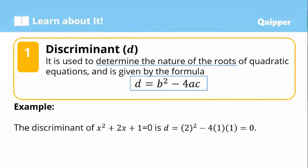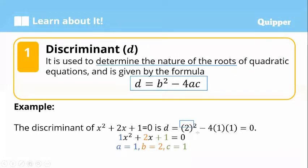For instance, the discriminant of x squared plus 2x plus 1 equals 0 is 0. First, we identify the values of A, B, and C. The quadratic term has a coefficient of 1, so A is 1, B is 2, and C is 1. Substituting into the formula: 2 squared is 4, minus 4 times 1 times 1 is also 4. That is why our discriminant is 0 because 4 minus 4 is 0.